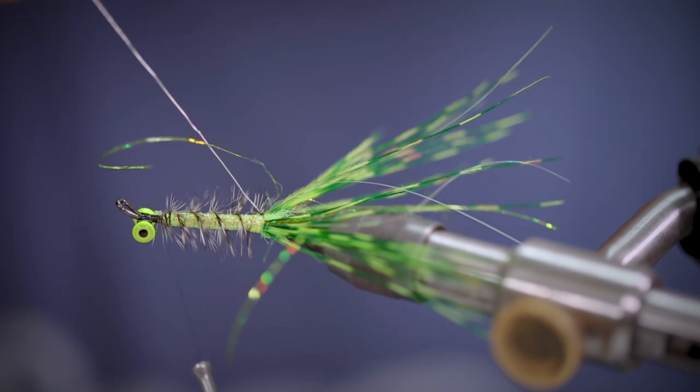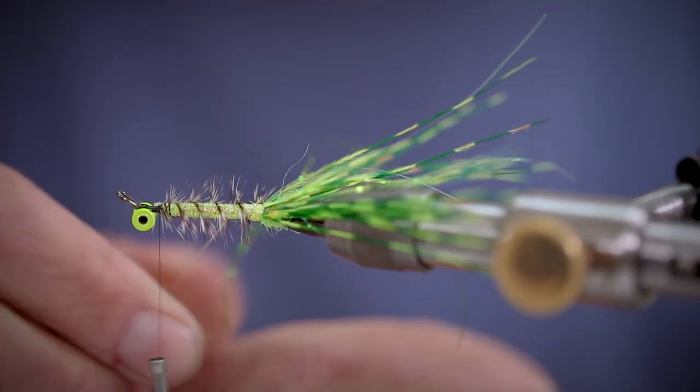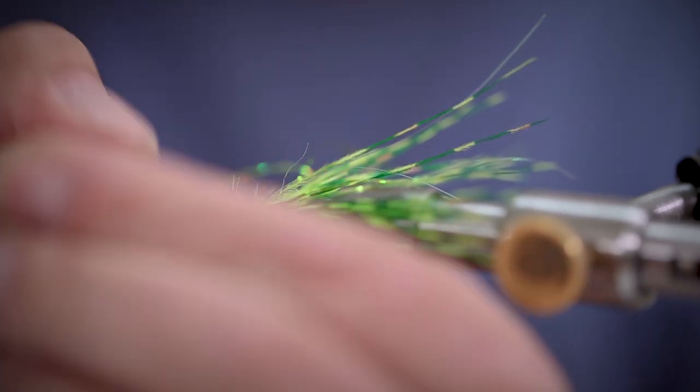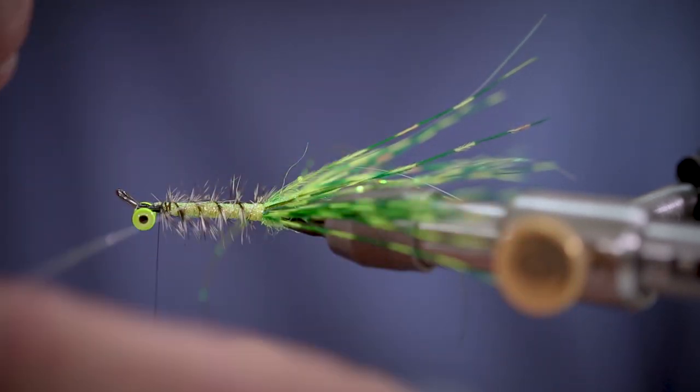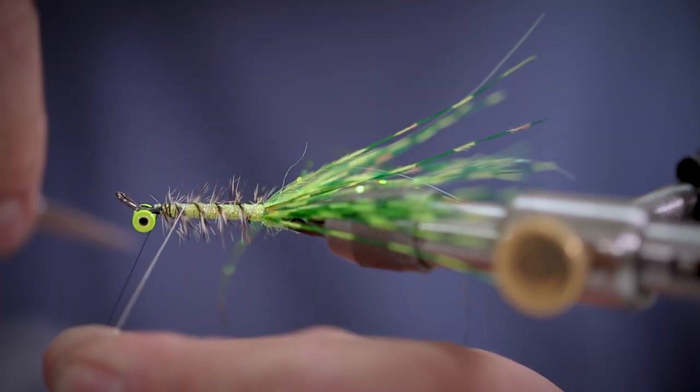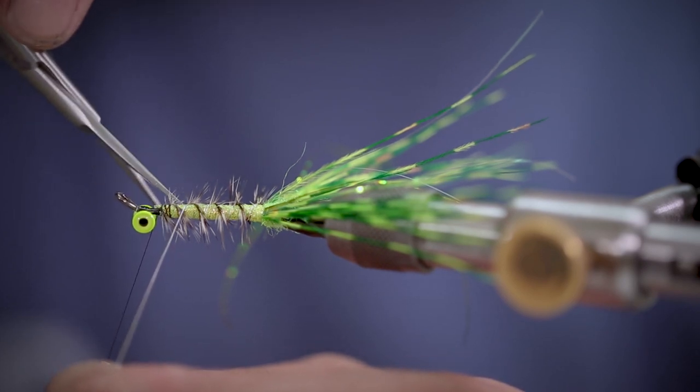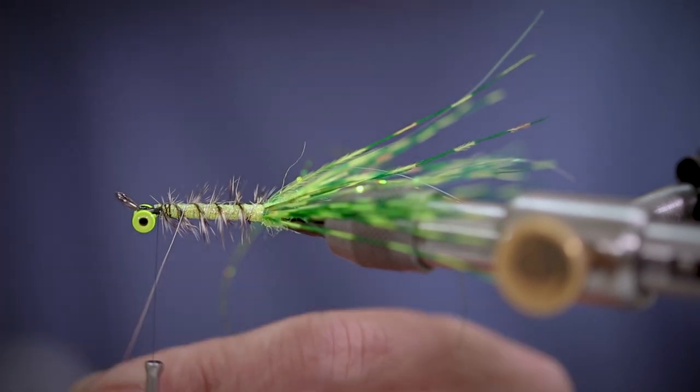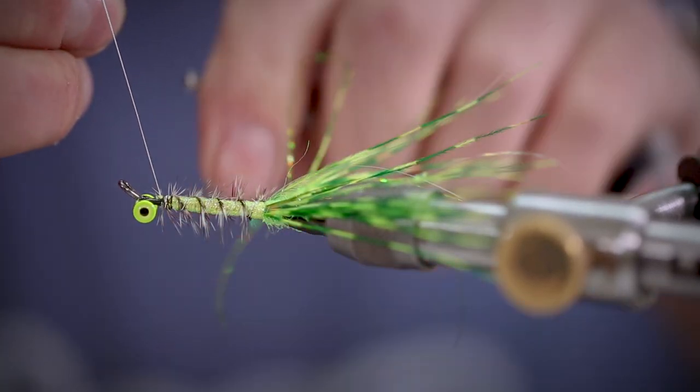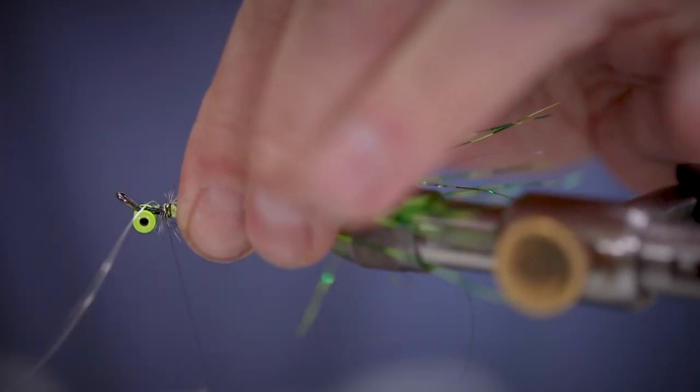Next, in the opposite direction, overlapping the hackle fibres, we're going to wind up the oval tinsel. And this is going to help make everything nice and strong. So even if that hackle fibre breaks, it won't destroy the fly. Plenty of tight turns and trim away the waste.